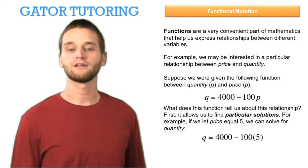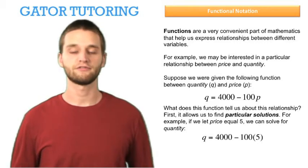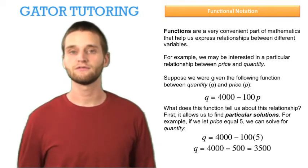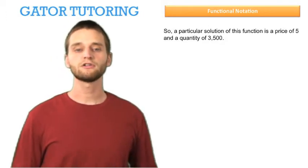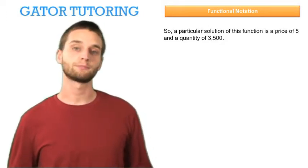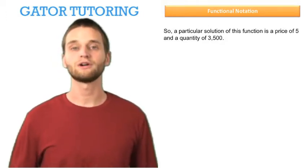Q equals 4000 minus 100, and we just plug in 5 for P, and now we can solve for what the quantity is at a price of 5, which is 3500. A particular solution of this function is a price of 5 and a quantity of 3500.